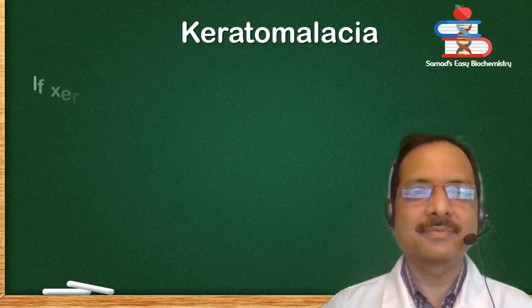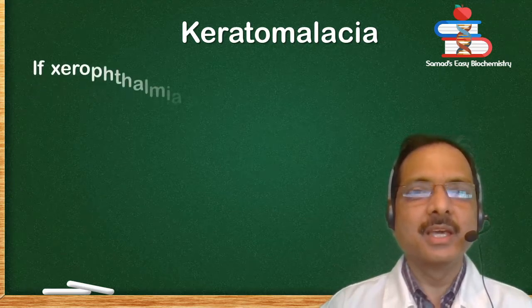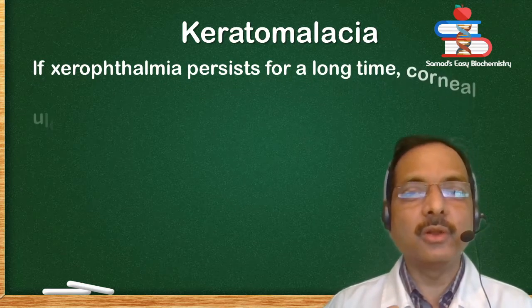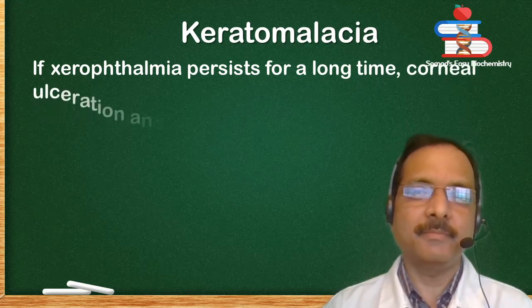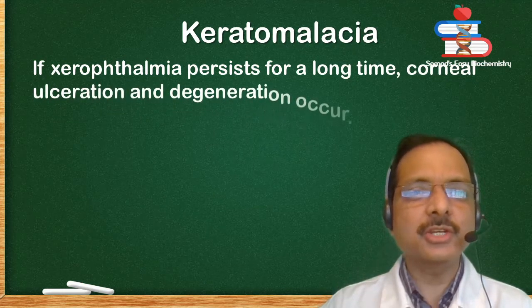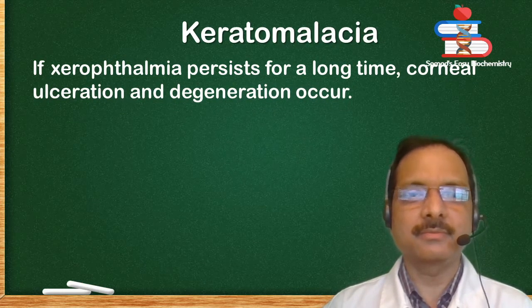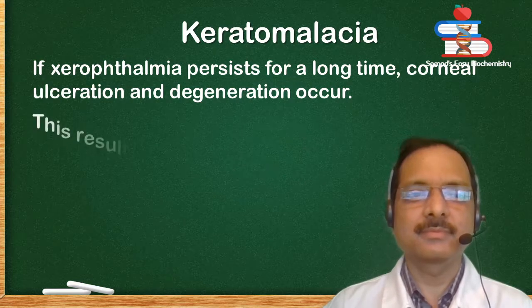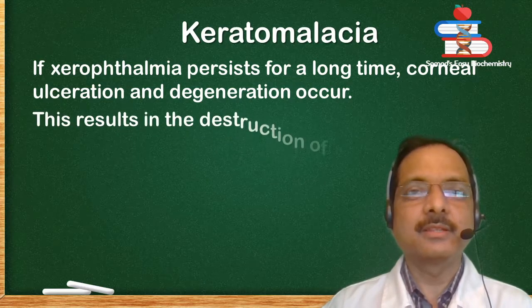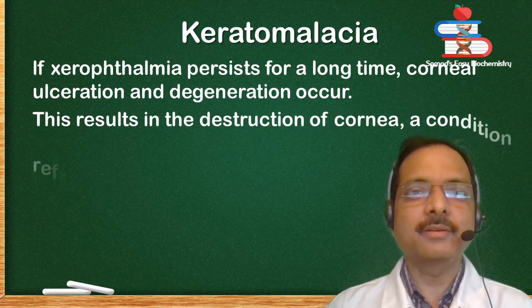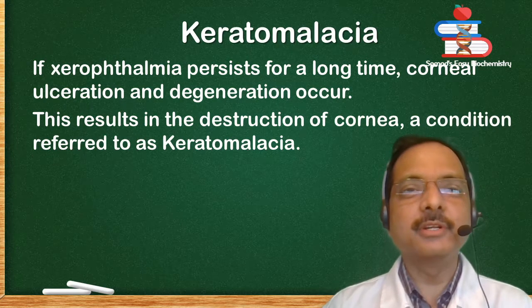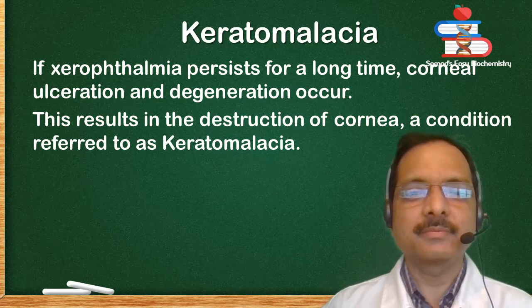Xerophthalmia is characterized by dryness in the conjunctiva and cornea, and keratinization of epithelial cells. Keratomalacia: if xerophthalmia persists for a long time, corneal ulceration and degeneration occur, resulting in the destruction of the cornea — a condition referred to as keratomalacia.